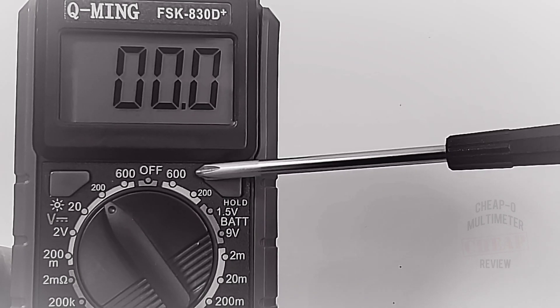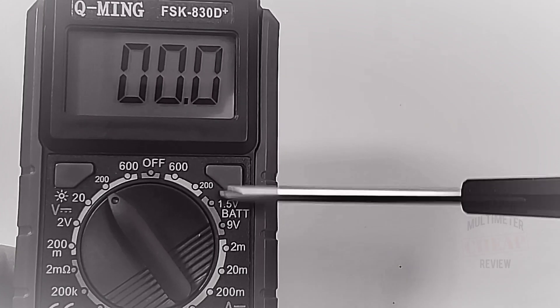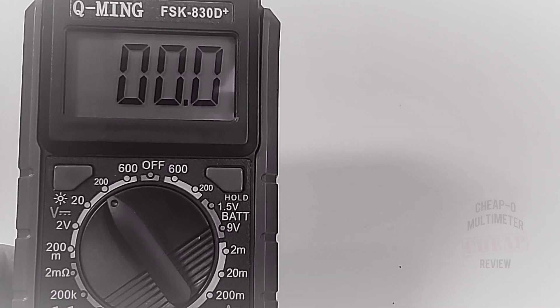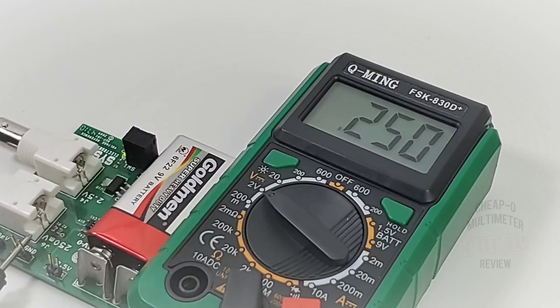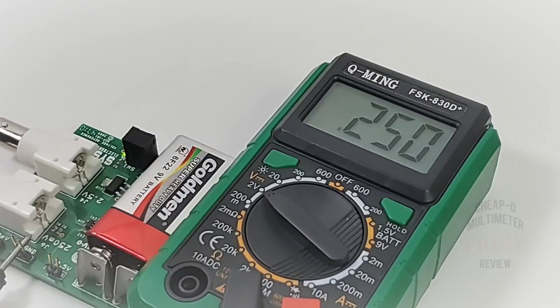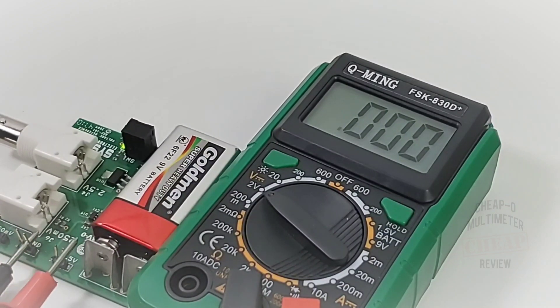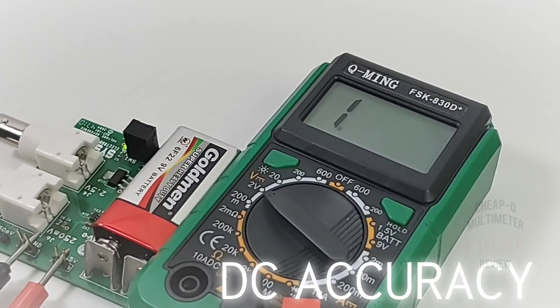For whatever reason Q-Ming decided not to put a volts AC signifier on the rotary selector switch, so just be aware that is volts AC. Now this 2,000 count non auto-ranging multimeter is sitting in millivolt mode right now. 250 millivolts is what we wanted and it's basically what we're getting. Good stuff.